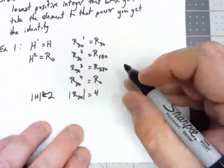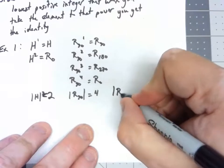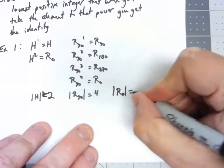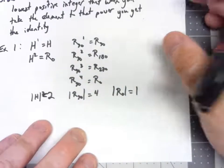It's also worth noting that the order of the identity element, in this case r0, that order is always 1. You take it to the first power, you've got the identity, so the order is 1.